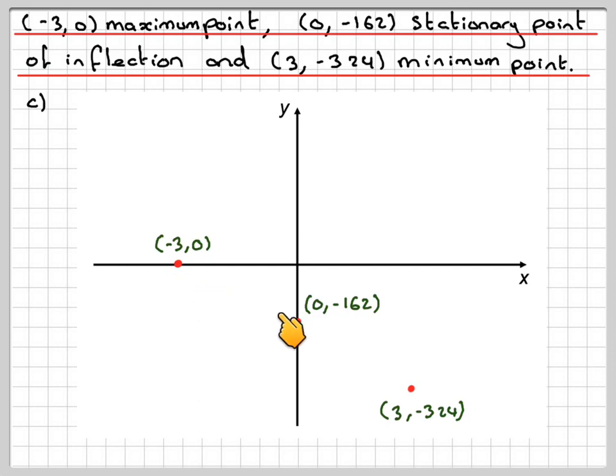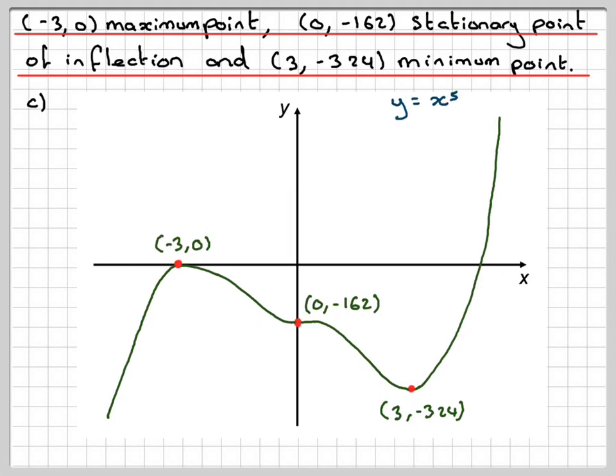I know that's a maximum, that's a stationary point of inflection, and that's a minimum. So I need to draw a curve that looks like that. The curve goes up and is 0 here at the maximum. It goes down and becomes 0 again, but then carries on in the negative slope again. Then it goes through that point, which is the minimum point, and back through here. In this question, we're not being asked to find the value of this particular point. Label the curve at the end: y equals x^5 minus 15x^3 minus 162.